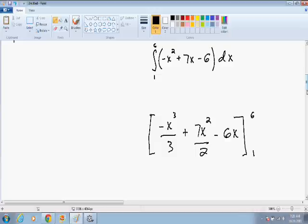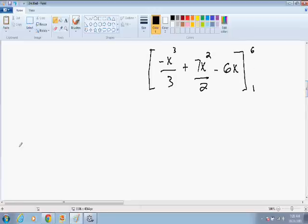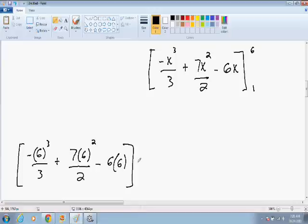So now our next step is to plug 6 in for x and plug 1 in for x and subtract them with each other. So the first thing I'm going to do is plug 6 in for x, and you need to subtract this, and now you need to plug 1 in for x.